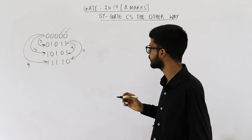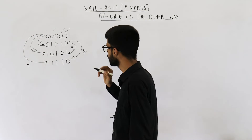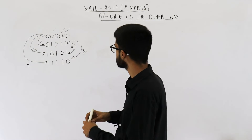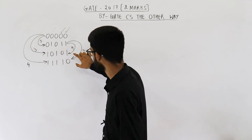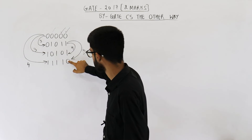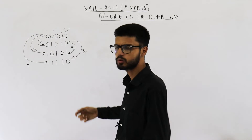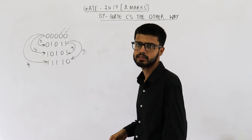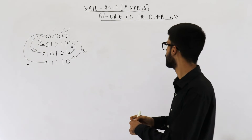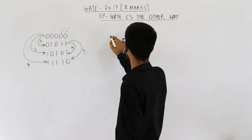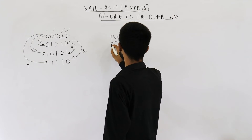Till now the minimum distance we are getting is three only. Only one pair is left — that means these two numbers. Let's analyze them: it is one, two, and three. Here also the Hamming distance is three. So overall minimum will be three, meaning the value of P is equal to three.